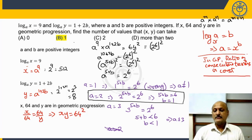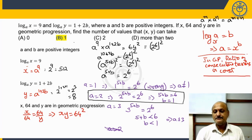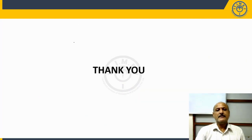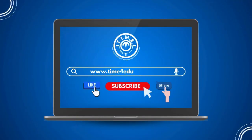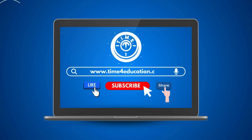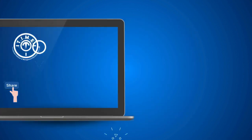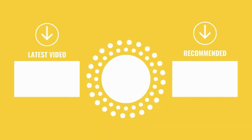The question asks to find the number of values that x and y can take. The answer is 1. Option B is the answer. That was the discussion on this particular question. Thank you very much.